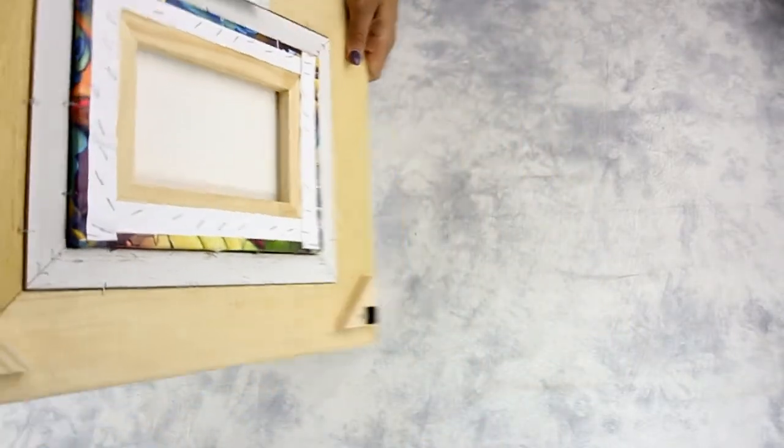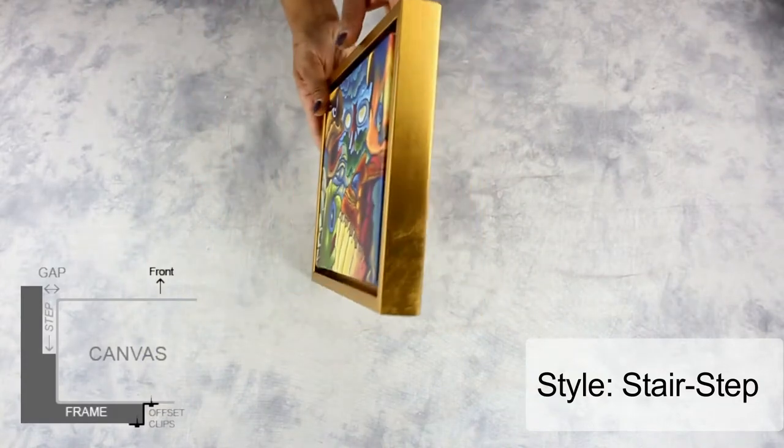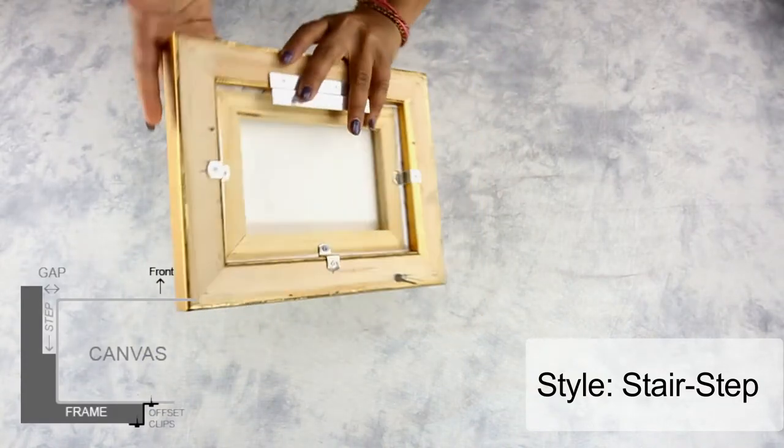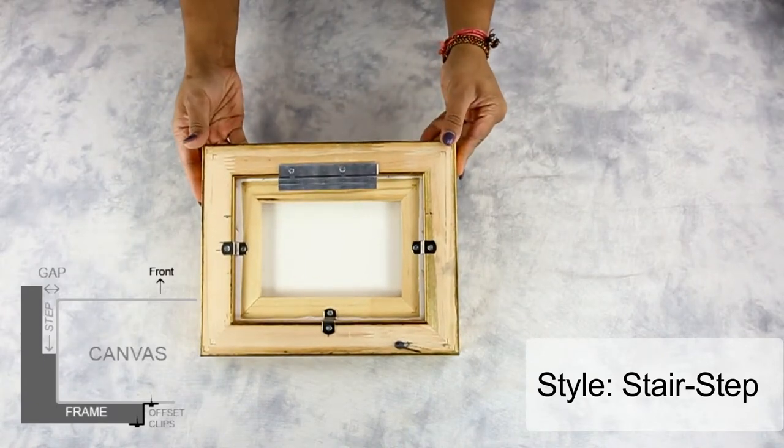One way is by using a standard picture frame to create a classic end look. Another way is by using a floater frame compared to a picture frame. This allows you to display your artwork as it is, without sacrificing the edges.